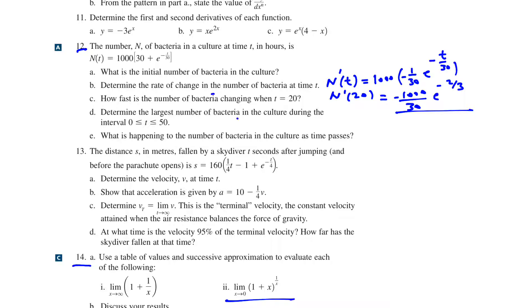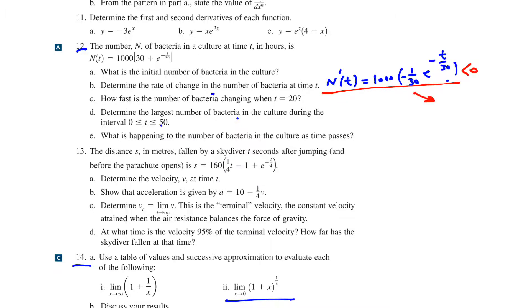Determine the largest number of bacteria in the culture during t from 0 to 50. We are looking for the maximum of the given function on a closed interval. Since the derivative of the function is always negative, the function is always decreasing. Therefore, the maximum number of bacteria occurs at the beginning, which is 31,000. As time passes, the number of bacteria decreases.